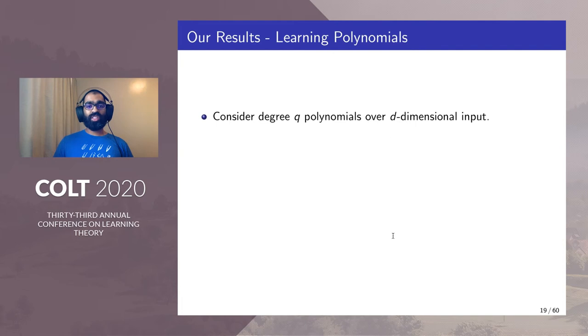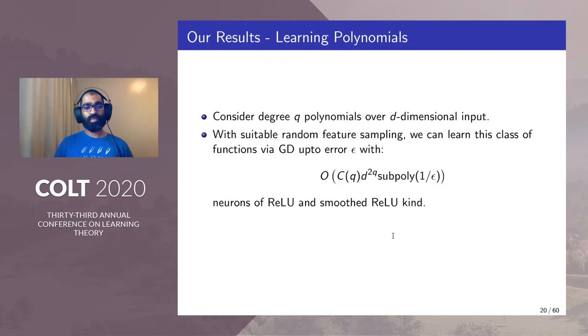We now describe our results on learning polynomials. We consider degree q polynomials over d-dimensional input, that is ℝ^d. With suitable random feature sampling, we can learn this class of functions via gradient descent on the recombination weight up to error ε with complexity c(q,d)·2q·subpoly(1/ε).